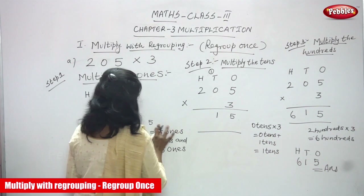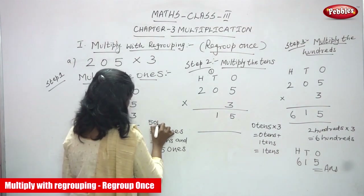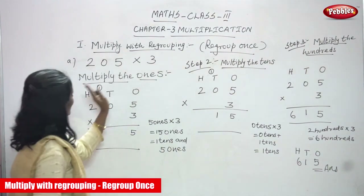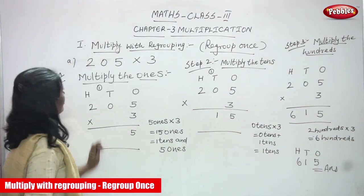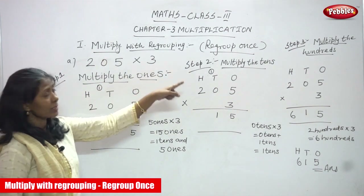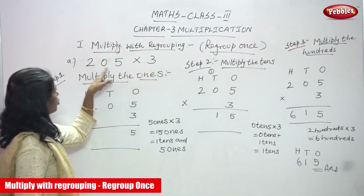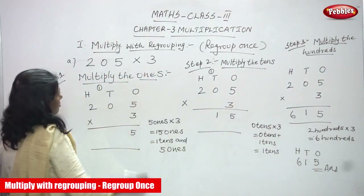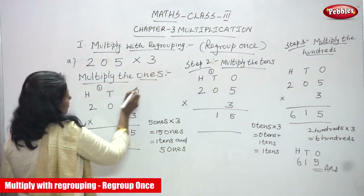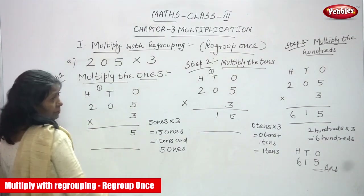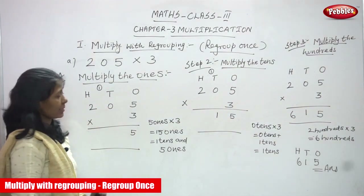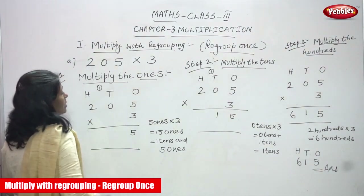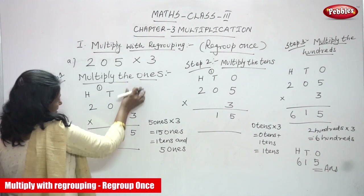Let me repeat the summary. You must write 5 ones into 3. This is multiply with regrouping, regroup once. You multiply 205 by 3. Two hundred and five is a three-digit number multiplied by a single-digit number. First, you write the place value, then start with the ones.